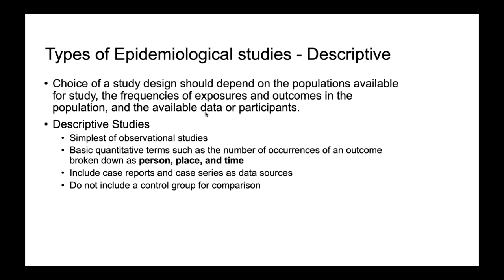So, types of epidemiological studies. There's descriptive — the choice of a study design should depend on the populations available for study, the frequencies of exposures and outcomes in the population, and the available data or participants. Descriptive studies are our simplest of observational studies. They include basic quantitative terms such as the number of occurrences of an outcome broken down as a person, place, and time. These can include case reports and case series as data sources. They do not include a control group for comparison.